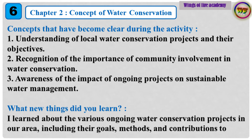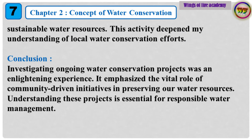Concepts that have become clear during the activity: 1. Understanding of local water conservation projects and their objectives. 2. Recognition of the importance of community involvement in water conservation. 3. Awareness of the impact of ongoing projects on sustainable water management. What new things did you learn? I learned about the various ongoing water conservation projects in our area, including their goals, methods, and contributions to sustainable water resources.